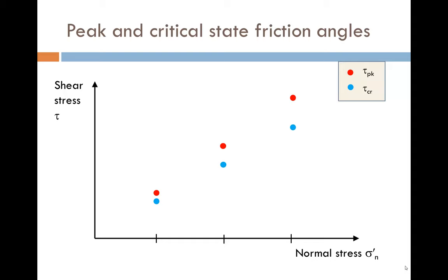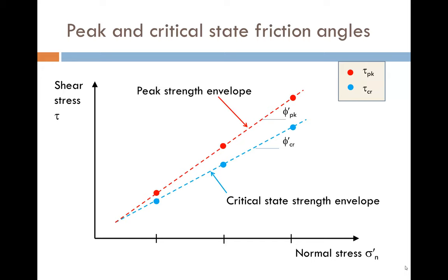In order to determine the shear strength parameters C dash and phi dash, we normally conduct a few shear box tests, typically three, at different normal stresses. We plot peak and critical state shear strength against normal stress and then draw the best fit tangent to each set.